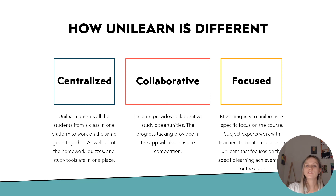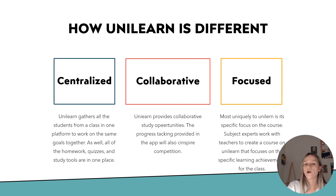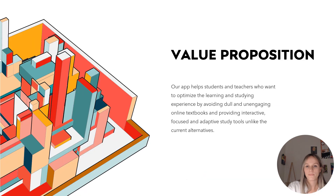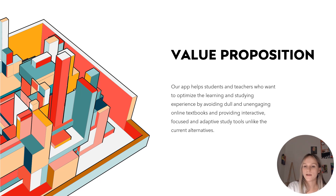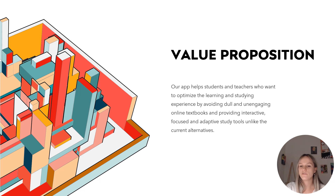UniLearn is different in that the courses are custom made for specific courses at universities. UniLearn uses AI to adapt to the student's learning needs and there is a sense of competition created for the modern student. So all in all, our app helps students and teachers that want to optimize the learning and studying experience by avoiding dull and unengaging online textbooks and providing interactive, focused, and adaptive study tools unlike the current alternatives. Thank you.